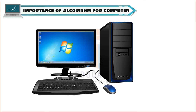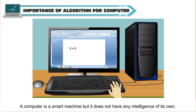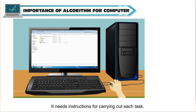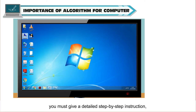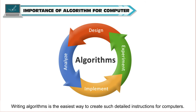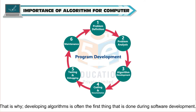Importance of algorithm for a computer: a computer is a smart machine but it does not have any intelligence of its own. It needs instructions for carrying out each task. For every task that you need the computer to do, you must give a detailed step-by-step instruction, taking into account all the possible situations or problems that might come up during execution. Writing algorithms is the easiest way to create such detailed instructions for computers. That is why developing algorithms is often the first thing done during software development.